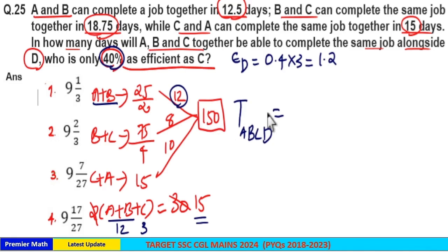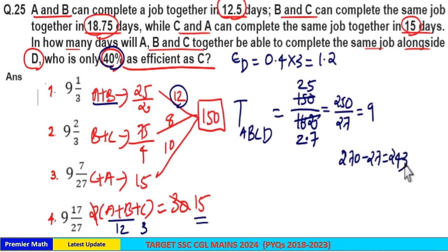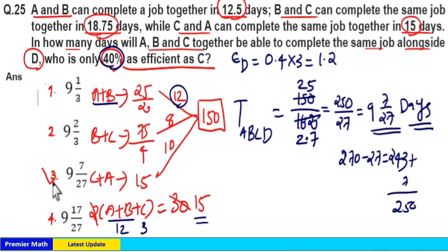Now time taken by A, B, C, and D to complete 150 unit of work is equal to 150 divided by total efficiency of A, B, C, D, which is 15 plus 1.2, 16.2. Now 250 divided by 27: 27 goes 9 times in 250. 27 into 10 is 270. 270 minus 27 equals 243, so remaining is 7. So 9 and 7 divided by 27. Option 3 is your answer.